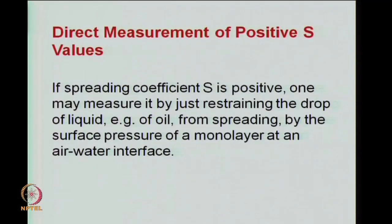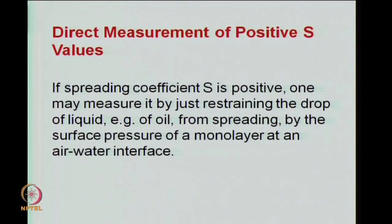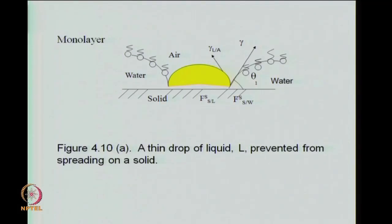The last topic we had looked into was measurement of positive S values in a direct fashion. If a liquid like a lubricating oil is supposed to spread on a metal surface, there is no way of having the equilibrium situation — we cannot get the contact angle measurement to give us a measure of the spreading tendency. The way to do that would be to restrain it from spreading by using the surface pressure or counter surface pressure of a monolayer present in water.